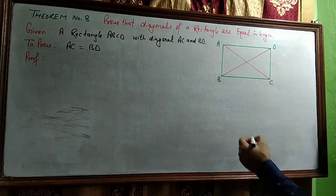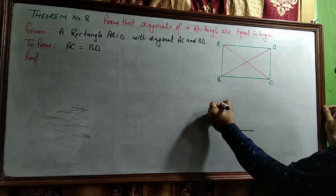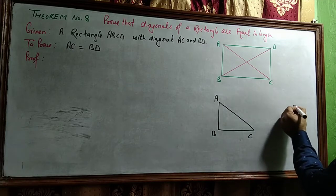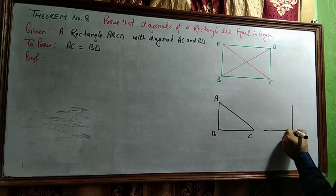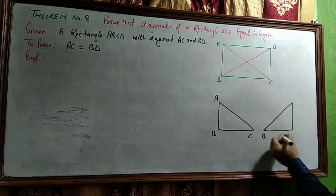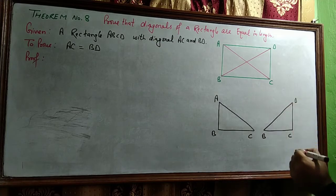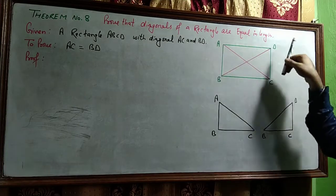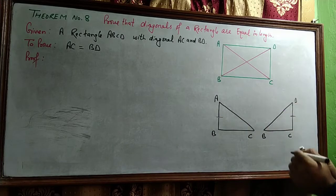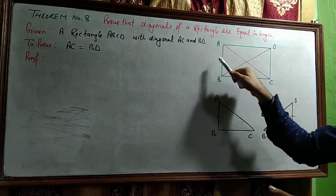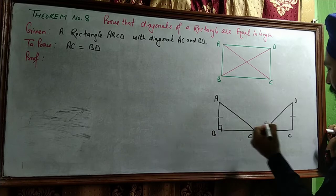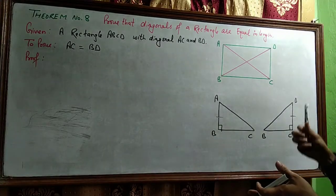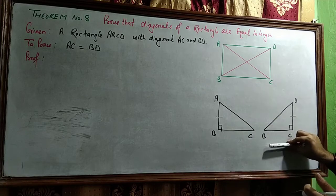To prove this, we consider two triangles. We have many options; let us consider triangle ABC and triangle BCD. In triangle ABC, diagonal AC falls, and in triangle BCD, diagonal BD falls. Since ABCD is a rectangle, we know AB and DC are opposite sides of the rectangle, and opposite sides of a rectangle are always equal — so AB is equal to DC. Then angle B is equal to angle C, because each angle of a rectangle is always equal to 90 degrees, so these two angles are also equal.